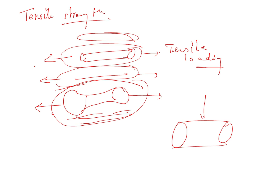In this test, a short cylinder or disc is laid on its side and a load is applied from the top along the diameter of the cylinder. A compressive load is applied along the diameter, and this load will generate tensile strain in the specimen.